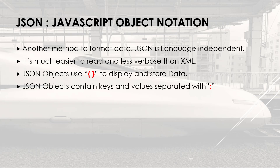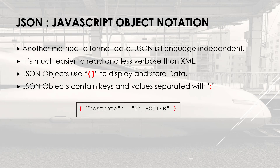JSON objects contain a key and a value separated with a colon character. For instance, in JSON, a router hostname could be displayed like this — the key, which is hostname in my example, followed by a value, my router. The entire structure is called a JSON object.